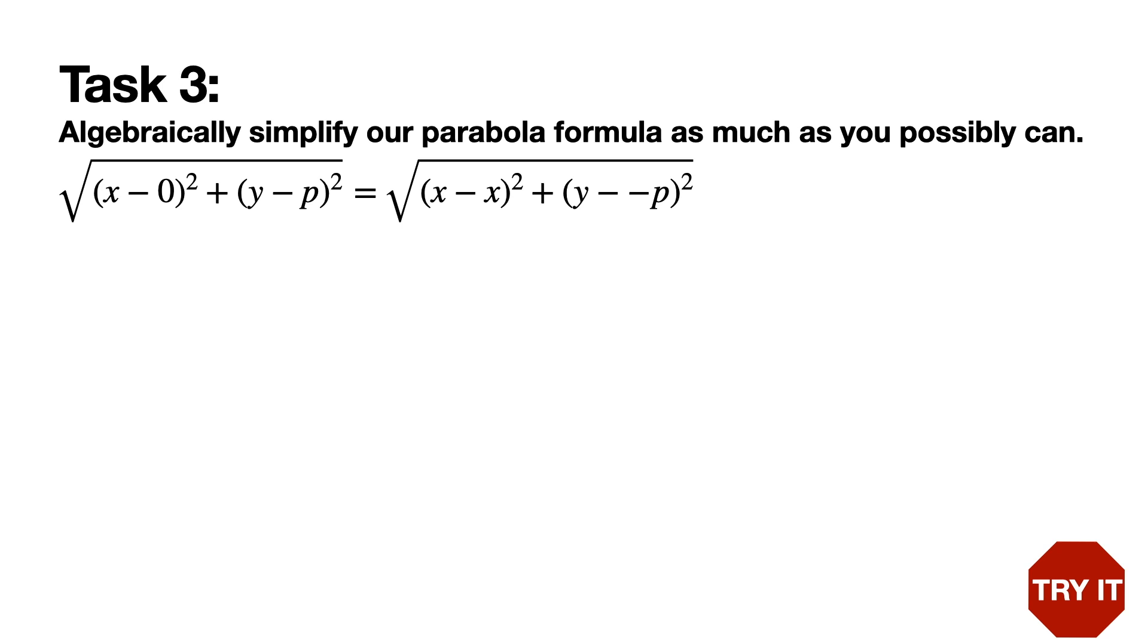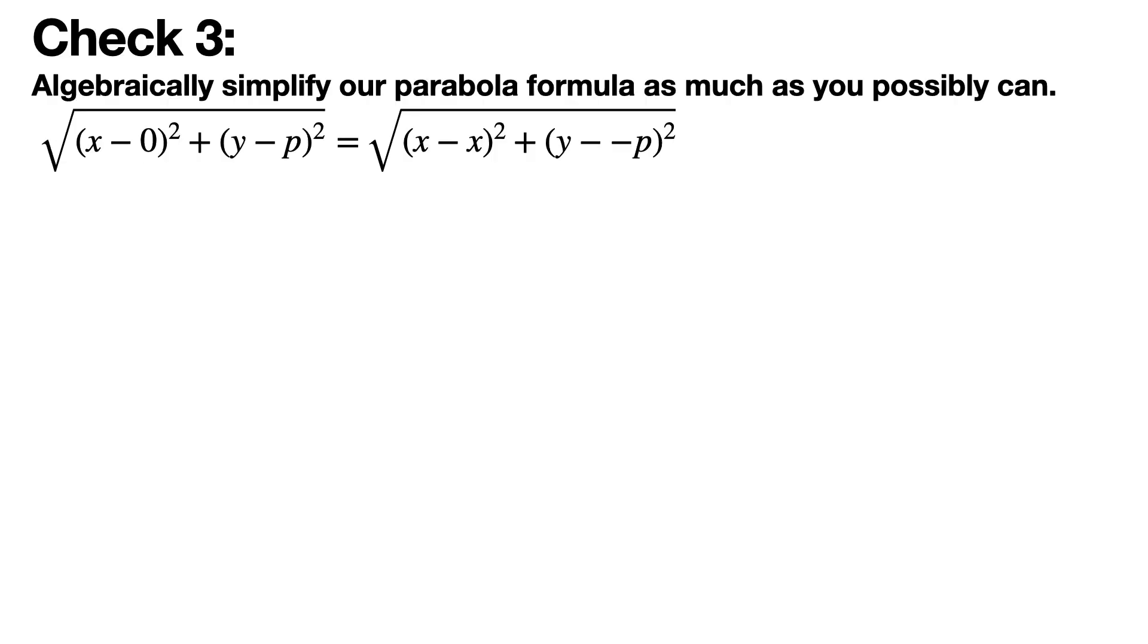We are going to go over the algebraic steps of how to simplify this. First, you can square both sides. Both sides are square roots. Squaring is the opposite of taking a square root, so you can simply eliminate the radicals entirely. The other change I made was I made the y minus negative p into y plus p.